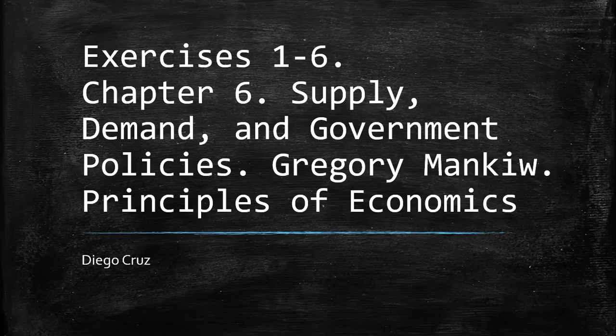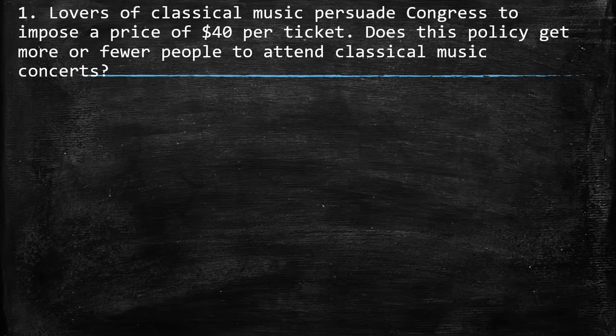Hi everyone. In this video we are going to develop the exercises from 1 to 6 of chapter 6, Supply, Demand and Government Policies. This is a book by Gregory Mankiw, Principles of Economics.